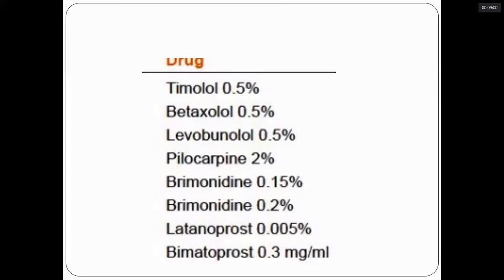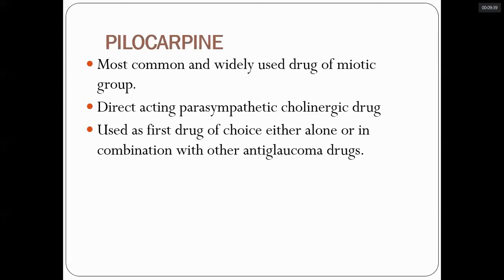Regarding available concentrations: timolol maleate is available in 0.5%, betaxolol 0.5%, levobunolol 0.5%, pilocarpine is available in 2%, brimonidine is available in 0.15% and also 0.2%, latanoprost is available in 0.005%, and bimatoprost is available in 0.03%. Pilocarpine is the most common and widely used drug in the miotics group.